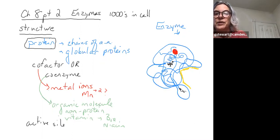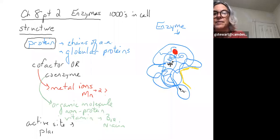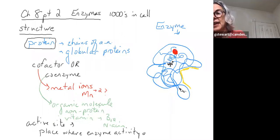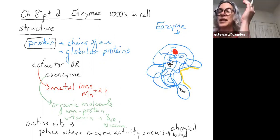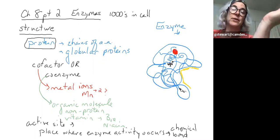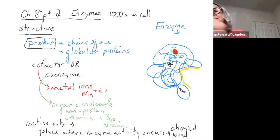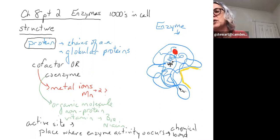The active site is super important because it's the place where enzyme activity happens — that is, a chemical bond being made or broken. The other important thing about the active site is that this is where the specificity of the enzyme comes from. This is why we say one enzyme, one substrate: the molecule that fits into the active site is the substrate, and it has to match the shape of that site.